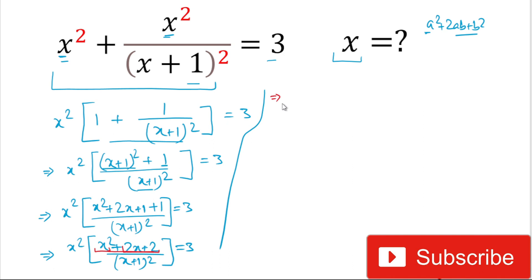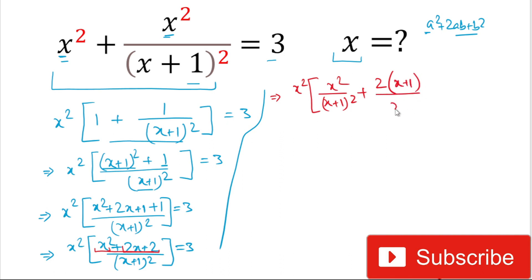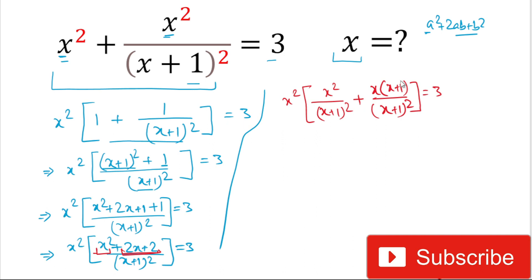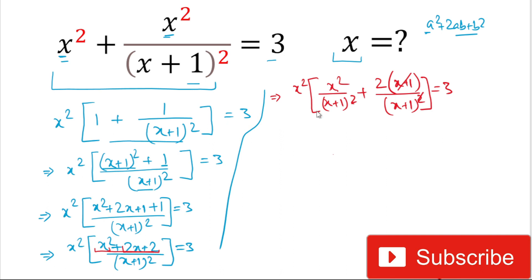We write x² divided by (x+1)² as one term, then take 2 common from 2x + 2 to get 2(x+1) divided by (x+1)². The (x+1) in the numerator and one factor of (x+1) in the denominator cancel, simplifying that term. All multiplied by x² equals 3.